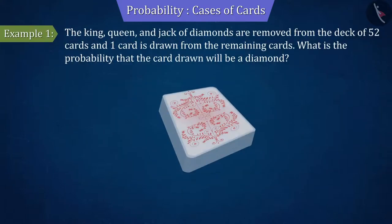If a king, queen and jack of diamonds are removed from the deck of 52 cards and the remaining cards are shuffled well, if one card is drawn from the pack, then what is the probability that the card drawn will be a diamond? Let's discuss this.